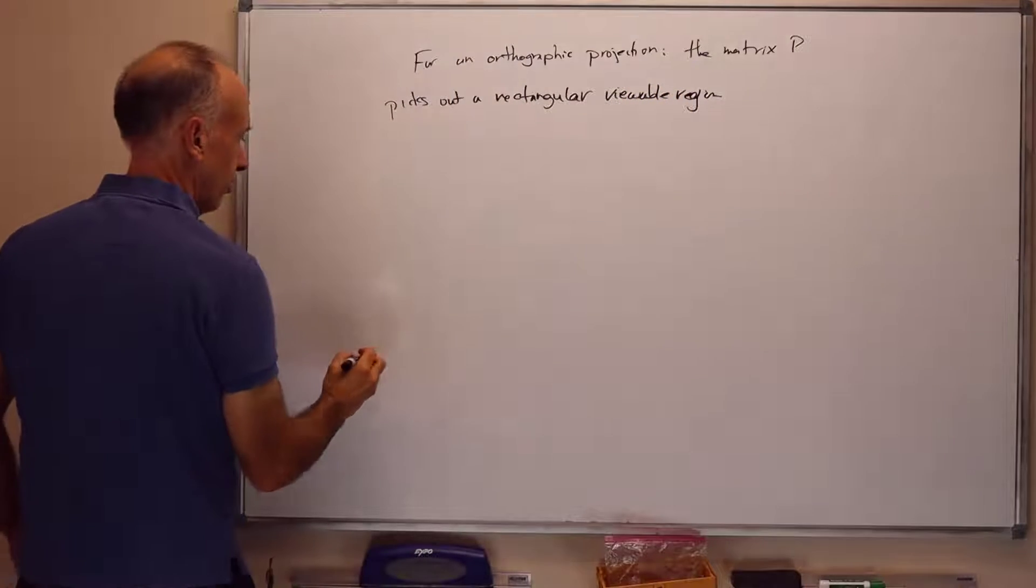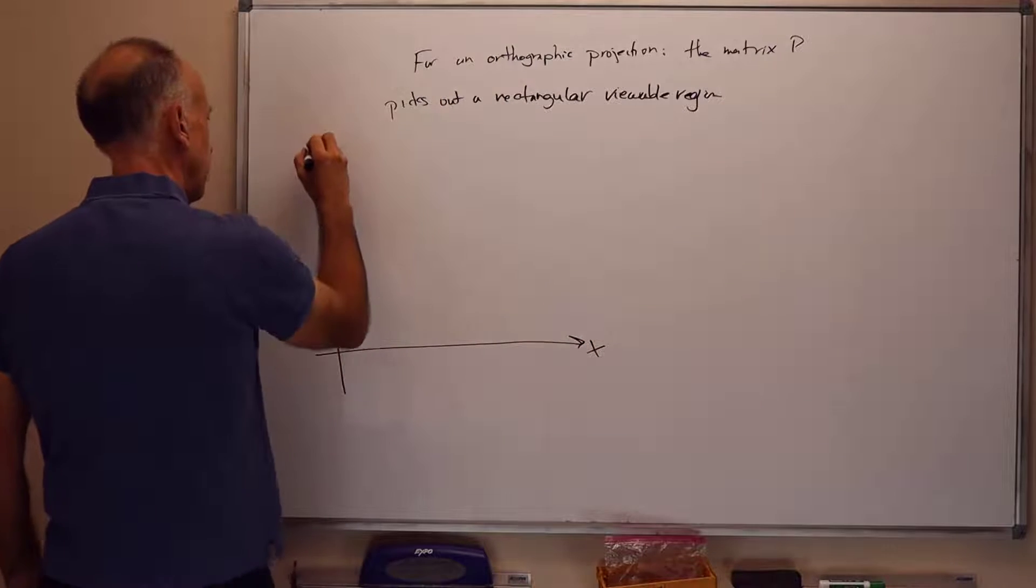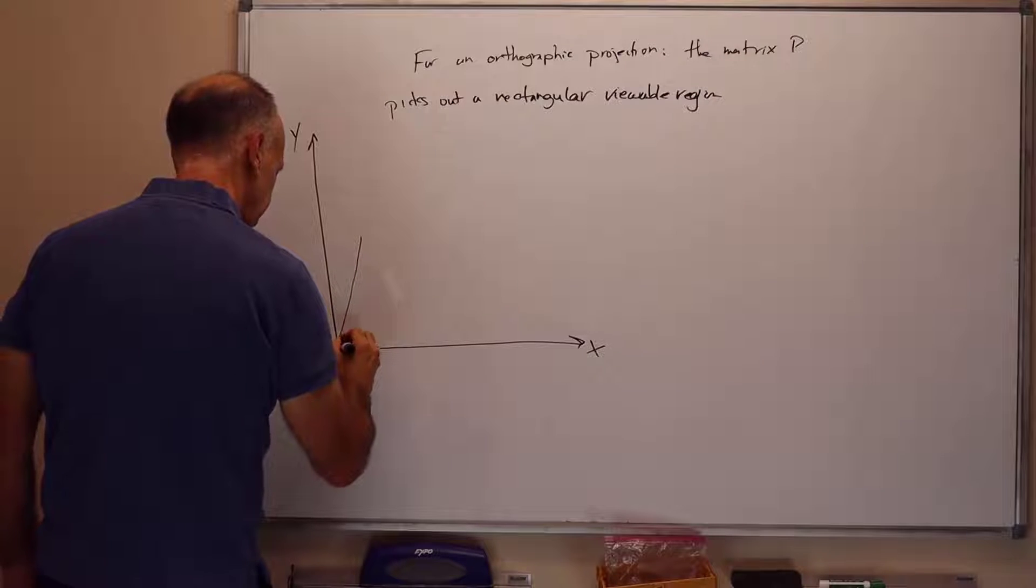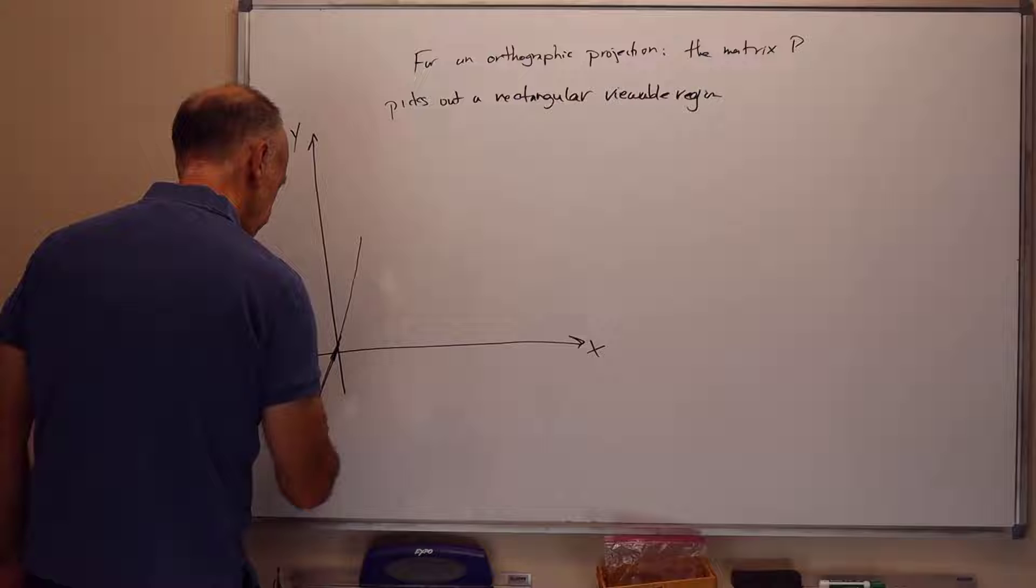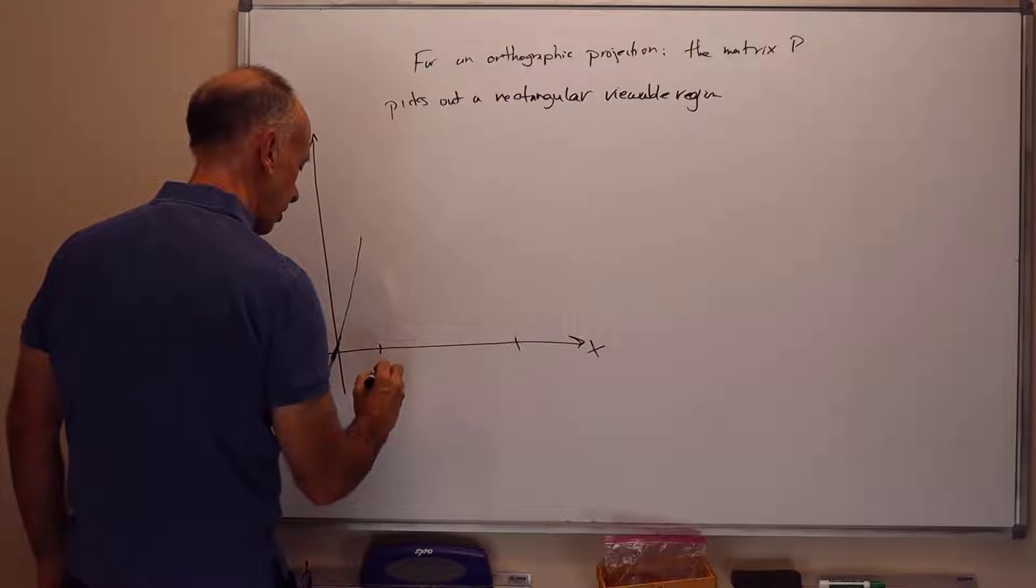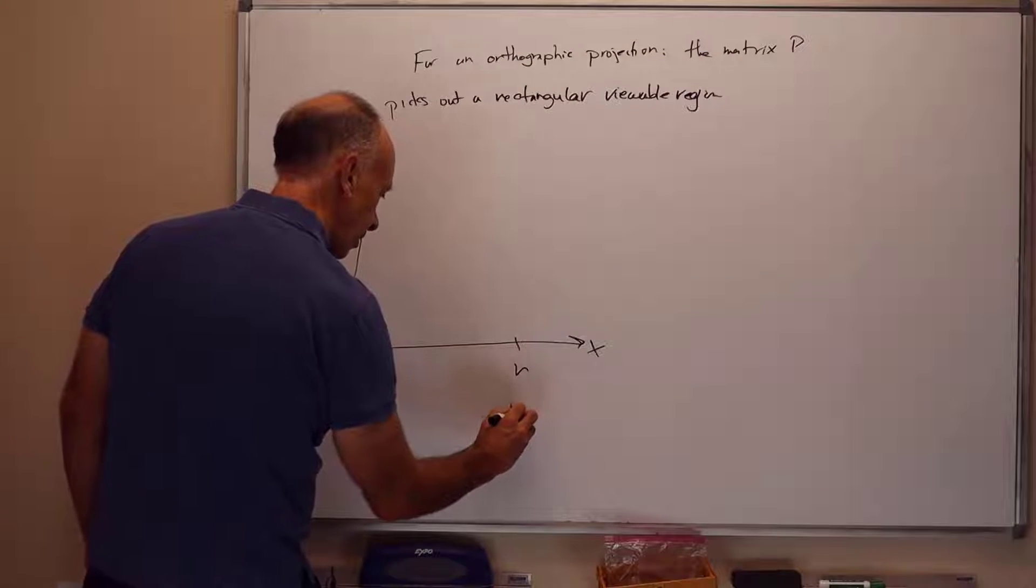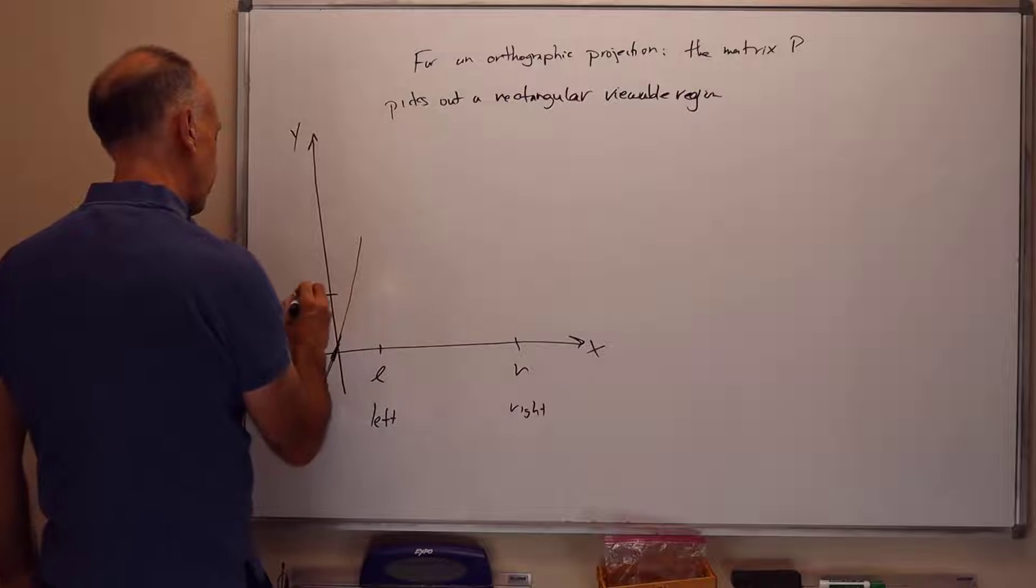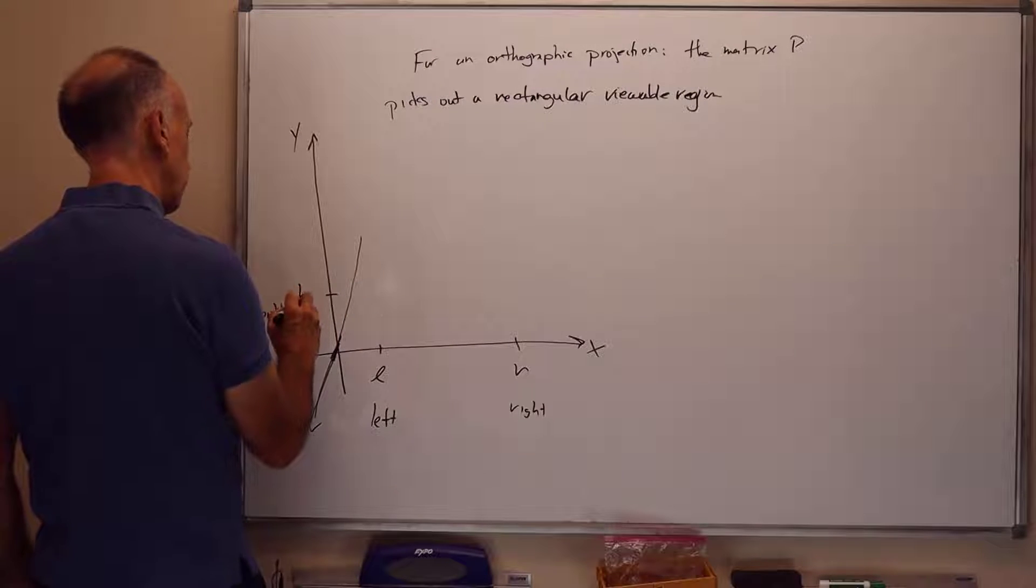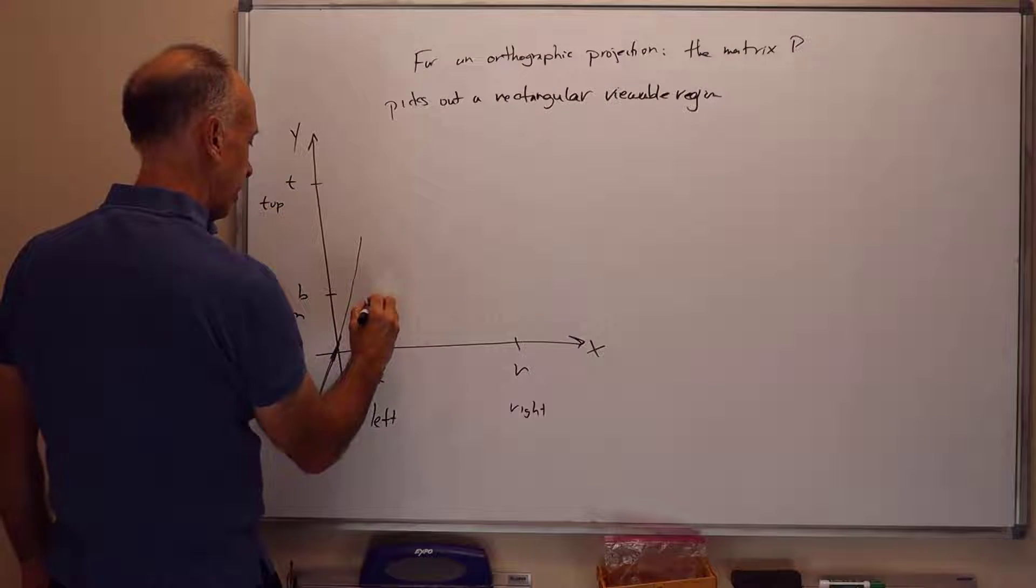Just to draw a picture of this, here's the x-axis, here's the y-axis, here's the z-axis, which is supposed to pass through where they intersect here. And we've got some region, which I'll use letters like L and R. L stands for left, R stands for right. We'll have B, which stands for bottom, is the minimum value of y. T, which stands for top, is the maximum value of y.